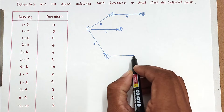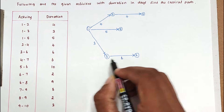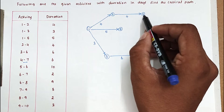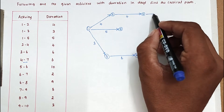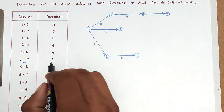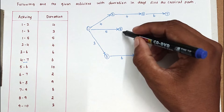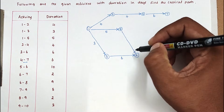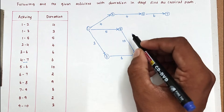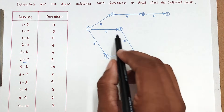Next, activity 3-6 has duration 6. Then activity 4-7 has duration 6. Activity 5-6 has duration 10. We draw the nodes and arrows for each of these activities on the network diagram.